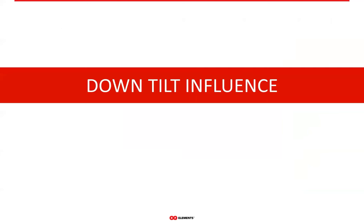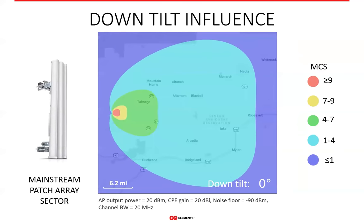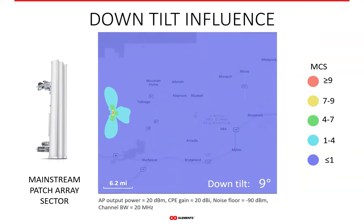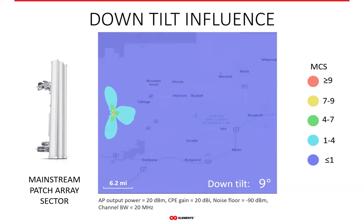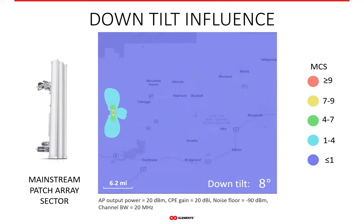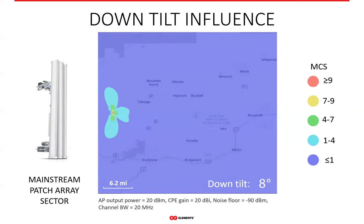Downtilt is another functionality of RF Elements horns, unlike any patchary antenna. Downtilt is a huge factor influencing the coverage area, at least with patchary sector antennas or any antenna with a very narrow radiation pattern in the elevation plane. From this animation, you can see that anything beyond a few degrees of downtilt makes the patchary pretty much useless — you lose the coverage almost completely. This is why traditional sectors require very precise setup of downtilt; they are very sensitive to even small deviations.